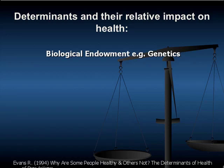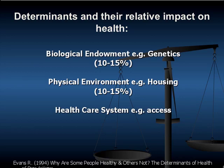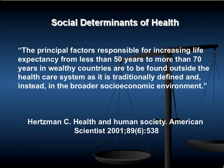But it's been suggested that there's a disproportionate focus on biomedical intervention in light of the influence of the various determinants of health. In terms of percentages: biological endowment and genetics — how much impact do you think that has on health outcomes? About 25 percent? What about the physical environment? Around 30 percent? What about the health care system itself? It's about 20 to 25 percent. Clyde Hertzman, many of you probably know at UBC through the Human Early Learning Program, published a really influential article in the American Scientist, arguing that the principal factors responsible for increasing life expectancy from less than 50 years to more than 70 in wealthy countries are to be found outside the health care system, in the broader socioeconomic environment.